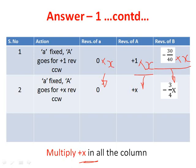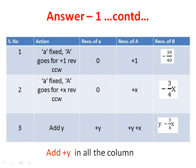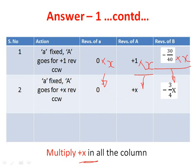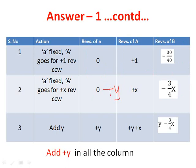The third step is to add plus Y to all cells of the table. So arm becomes 0 plus Y, giving plus Y. Gear A becomes plus X plus Y. Gear B becomes minus 3 by 4 X plus Y. We have now completed the table of motion.